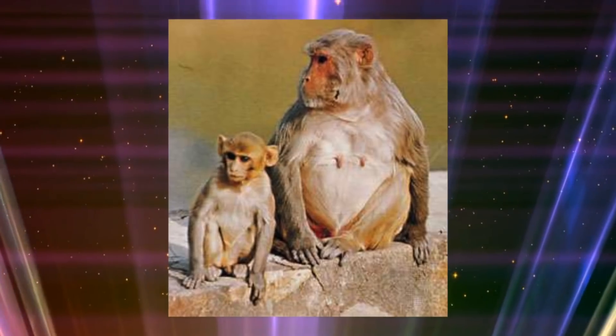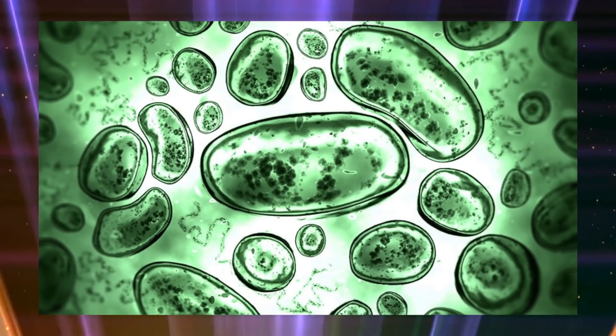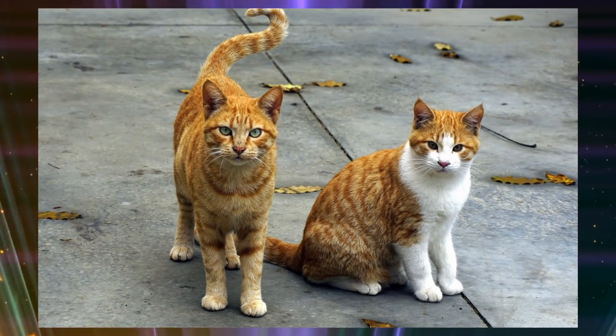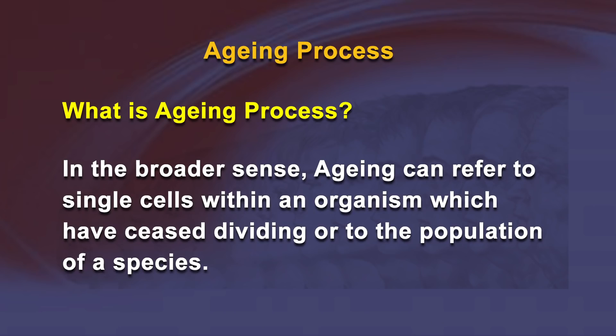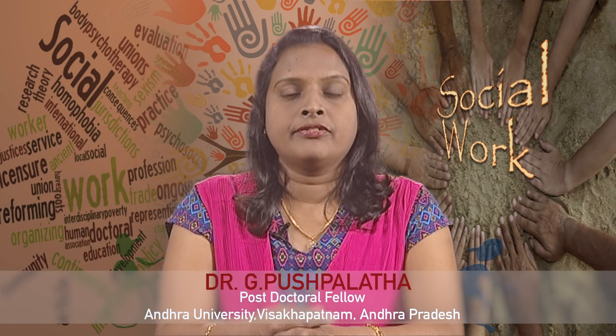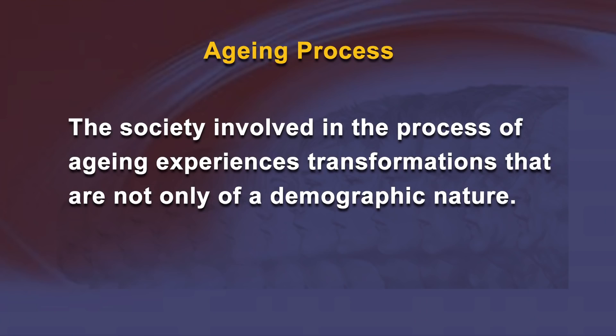What is the aging process? Aging is the process of becoming older. The term refers especially to human beings, many animals and fungi, whereas bacteria, perennial plants and some simple animals are potentially immortal. In the broader sense, aging can refer to single cells within an organism which have ceased dividing, or to the population of a species. The process of aging can be measured by different methods. The appropriate means is the increasing proportion of the aged in society. A society involved in the aging process experiences transformations that are not only demographic in nature — everything is changing: economic, social and political conditions.